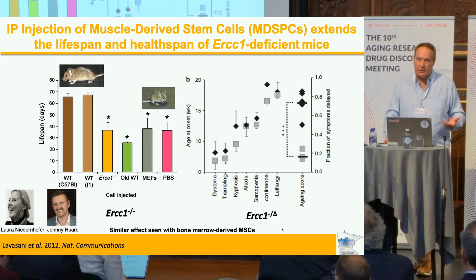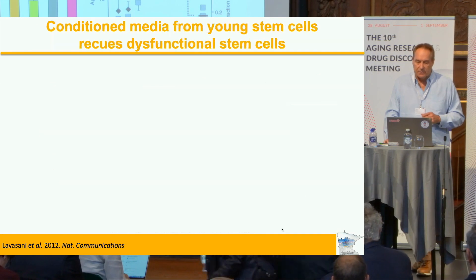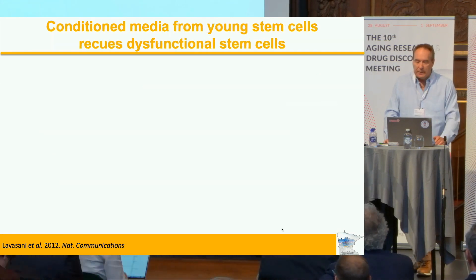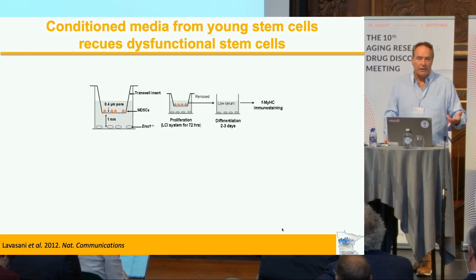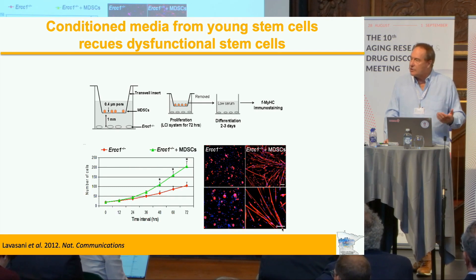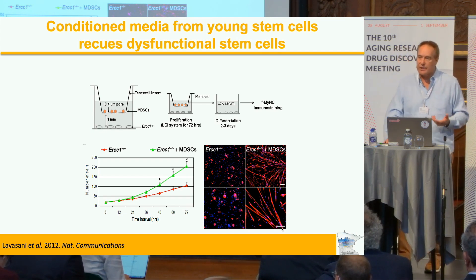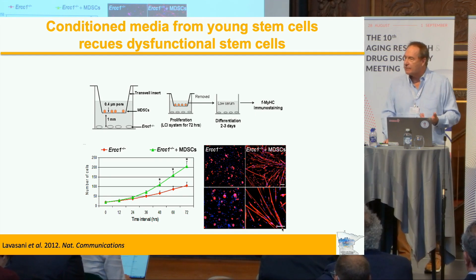We've now done this with bone marrow MSCs, and others have done it with other types of adult stem cells. Functional stem cells work; aged or dysfunctional stem cells do not. We also showed that if you co-culture young, viable stem cells with stem cells from a progeria mouse and look for proliferation and the ability of these muscle cells to differentiate towards myofibers, co-culture in a trans-well system — so there was no cell-to-cell contact — led to increased proliferation and improved differentiation, suggesting there were soluble factors in the conditioned media conferring this effect.